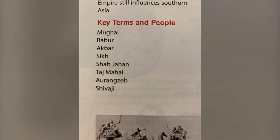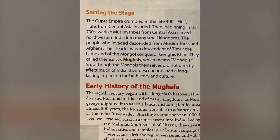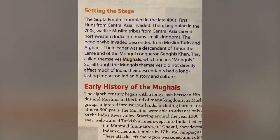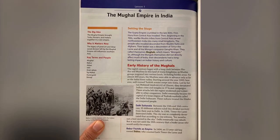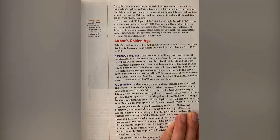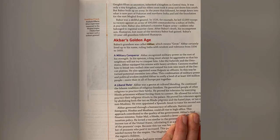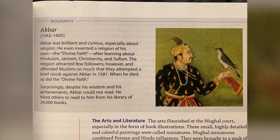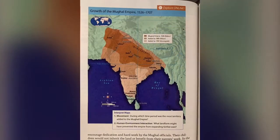I look at key terms. I notice that the key terms are highlighted, and I look at the headers. I see 'Setting the Stage' and 'Early History of the Moguls.' This is definitely going to be about the Mogul people. I see someone named Akbar mentioned multiple times, and there's even a subsection about him.